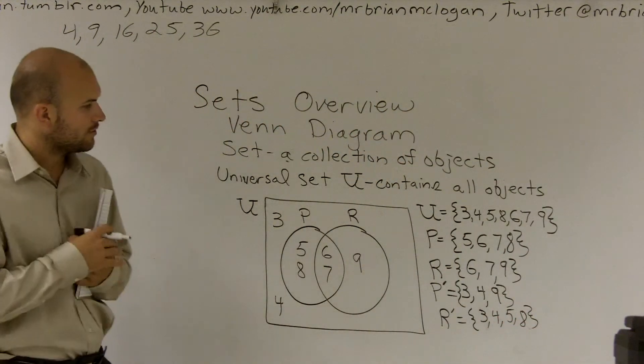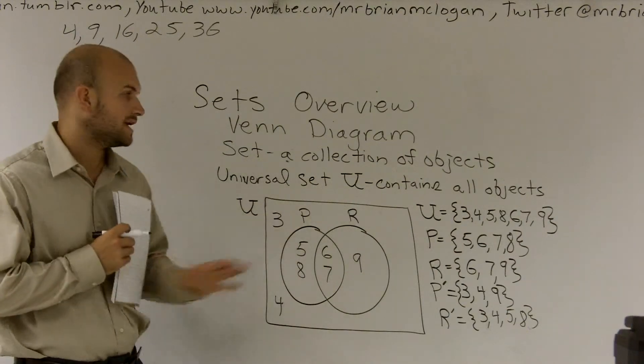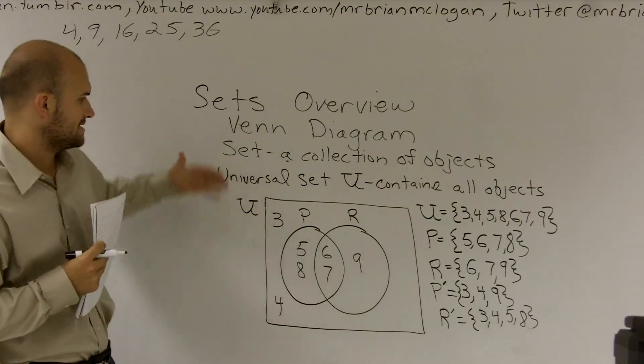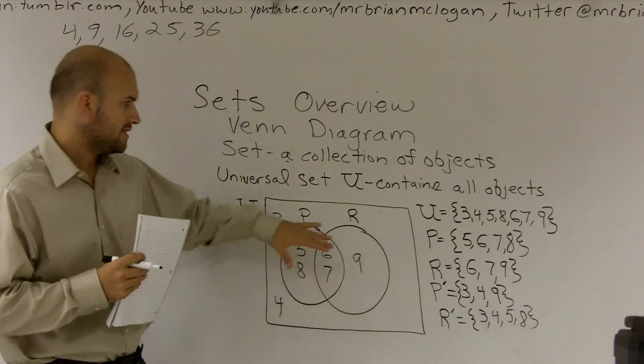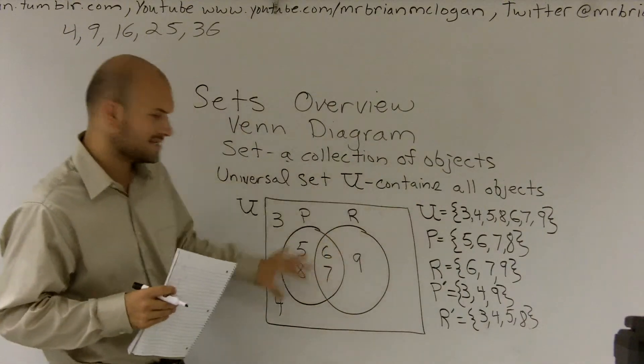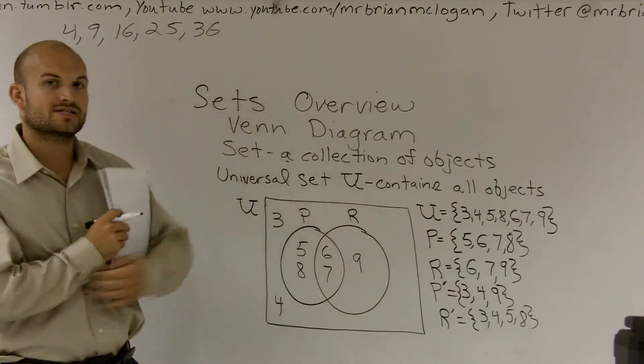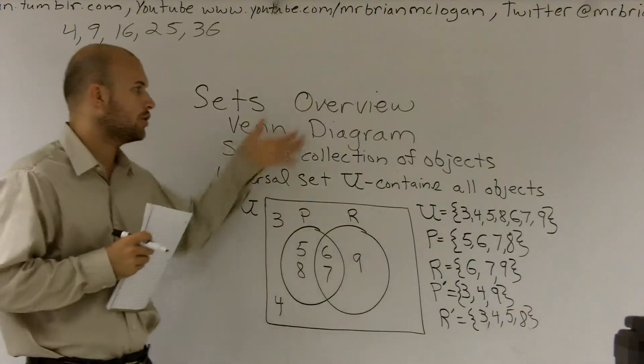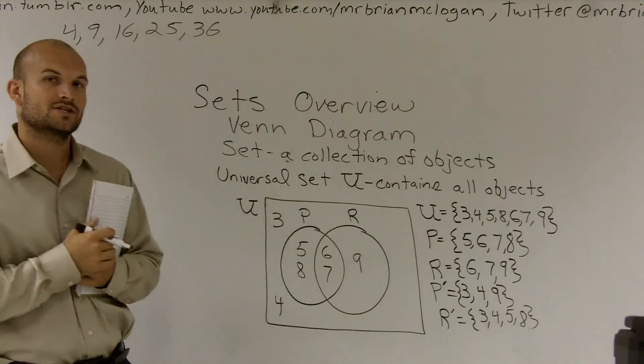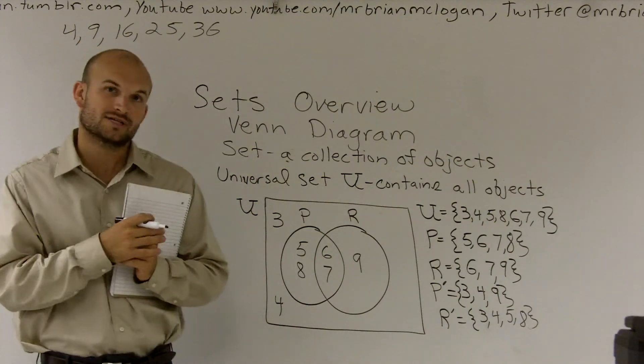And actually in another video, what I'll do is I'll go over intersection and union with you. But for right now, if you guys can just remember our universal set and then we have what our subsets are and also the complements of both of our subsets. So that is our set overview number three. In the next one, I'll go over how to do intersection and union and the complement of intersection and union.